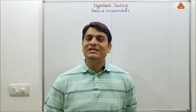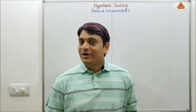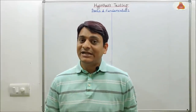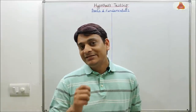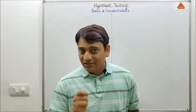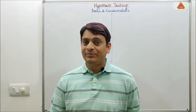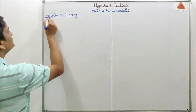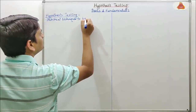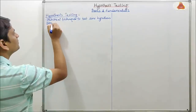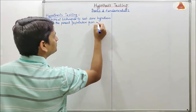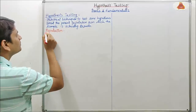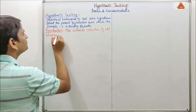Here two special terms are coming: one is sample and second one is population. So what is population and what is sample? Population means the complete collection of all elements which has to be studied, and sample means a sub-collection of the elements drawn from the population. So first I will write these key points then I will explain in detail about sample and population.